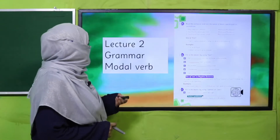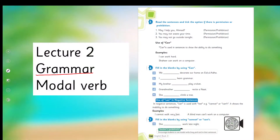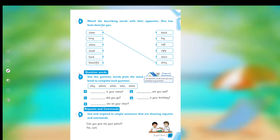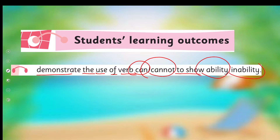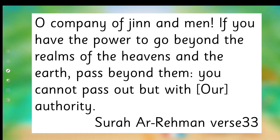My dear students, today under the title of grammar, we are going to learn about modal verbs. Previously, I taught you about requests and commands in Grade 2, and we learned the use of can and cannot. To show ability or inability, we use can and cannot. Today we are going to learn further — to demonstrate the use of modal verb can and cannot to show ability or inability. This is our today's SLO.